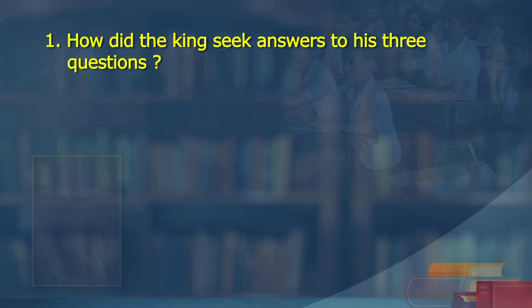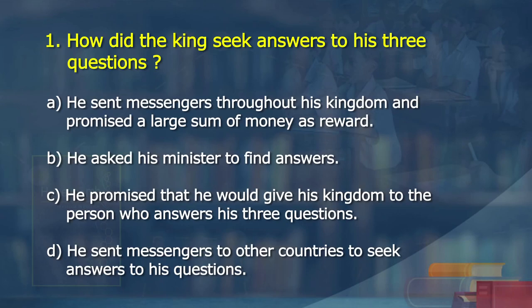Learners, you should now be able to understand the text and the story. There may be some gaps — you have to read the story and understand. Kriti, there are two multiple choice questions which appear on the screen. How did the king seek answers to his three questions? Option A: he sent messengers throughout his kingdom and promised a large sum of money as reward. Option B: he asked his minister to find answers. Option C: he promised to give his kingdom to the person who answers the three questions. Option D: he sent messengers to other countries.